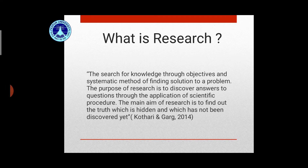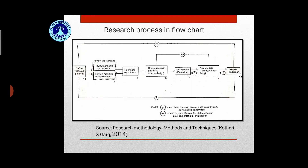In the given diagram you can see the flow chart of the steps required for conducting a scientific research. The steps are: define research problem, review the literature, formulate hypothesis, design research, collect data, analyze data, interpret and report.